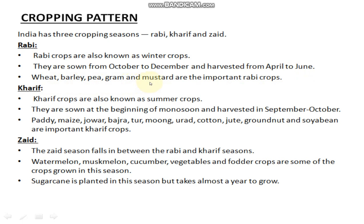Second, Kharif crops, also known as summer crops. They are sown at the beginning of the monsoon and harvested in September–October. Examples include rice, maize, jowar, bajra, moong, urad, cotton, jute, and soybean.